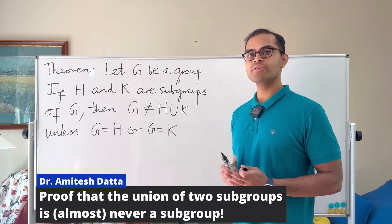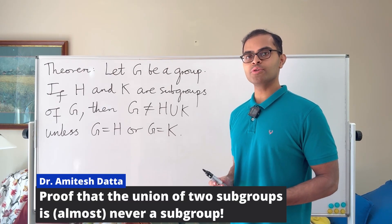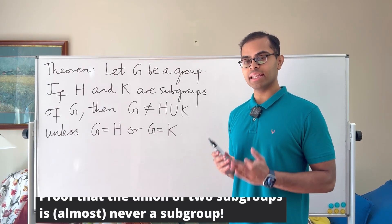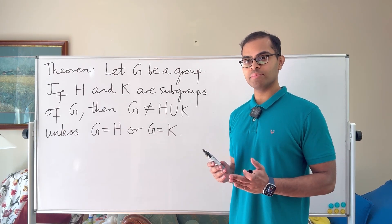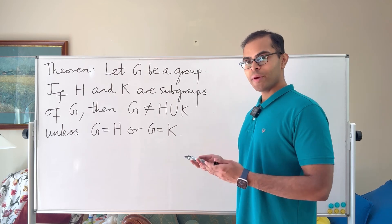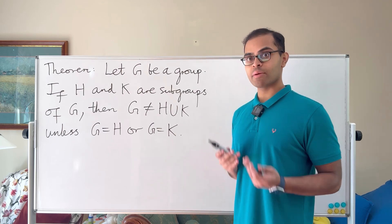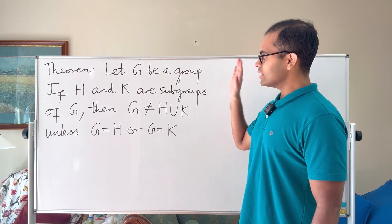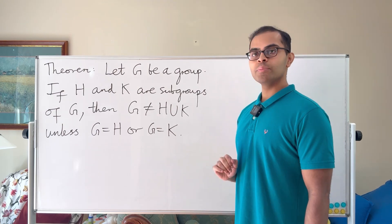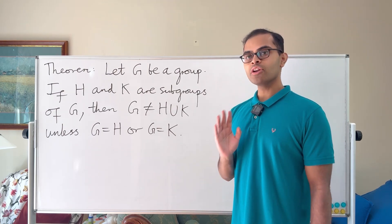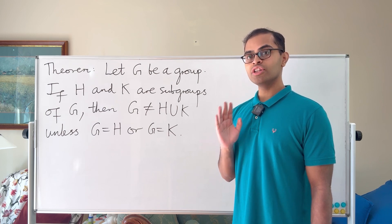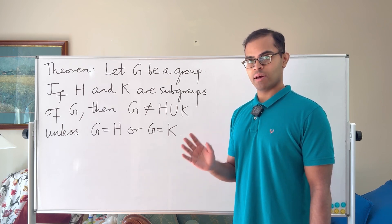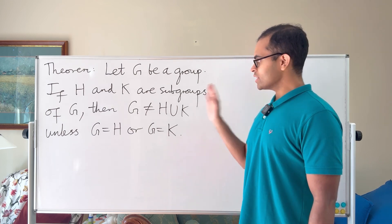We're going to prove a beautiful statement in group theory that's great practice with the elementary concepts of the group axioms and subgroups. The statement is: let G be a group — G cannot be equal to the union of two of its proper subgroups.